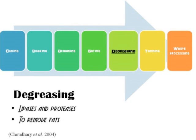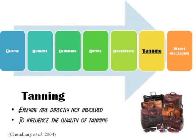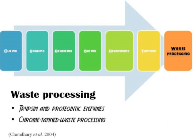In the degreasing stage, lipases and proteases are used to remove and reduce natural fatty acids from the skin, which could cause difficulties in chemical absorption. The degreasing process removes excess fat and distributes it evenly. Although enzymes are not directly involved in the tanning stage, it makes leather more durable and less susceptible to decomposition. For waste processing, trypsin and proteolytic enzymes are involved. Chrome waste from leather processing occurs in three forms: liquid waste, solid waste, and sludge. The process maximizes chrome uptake and minimizes liquid or solid chrome wastes.